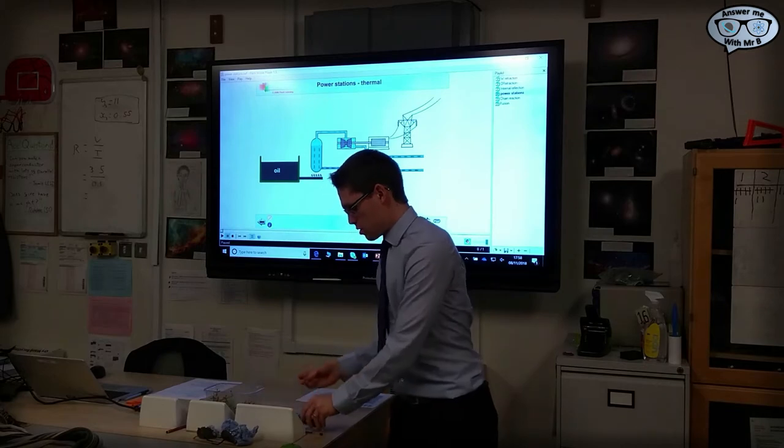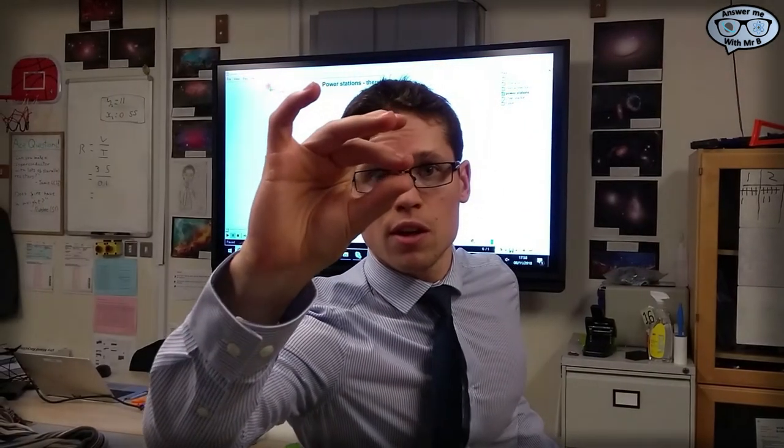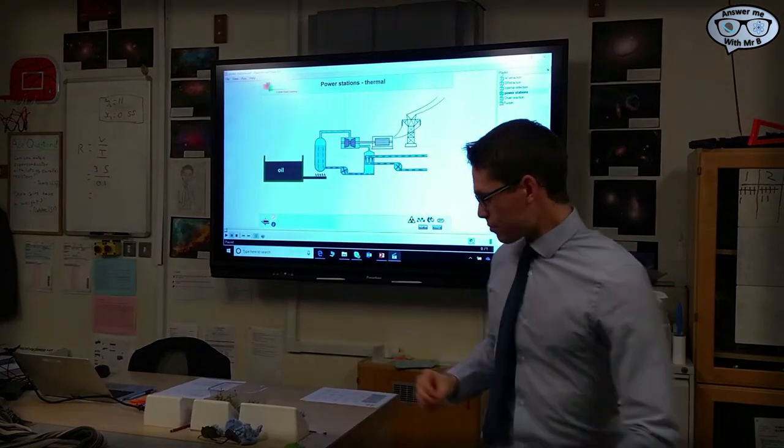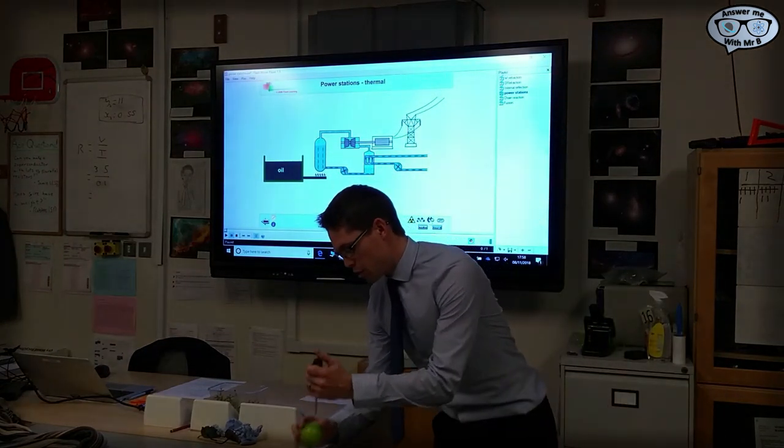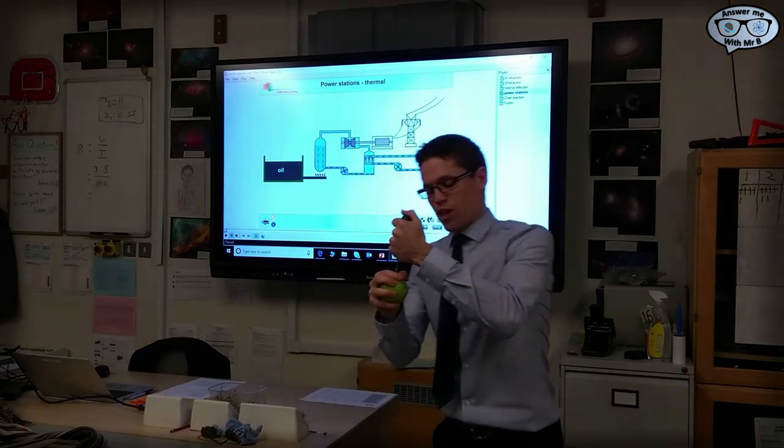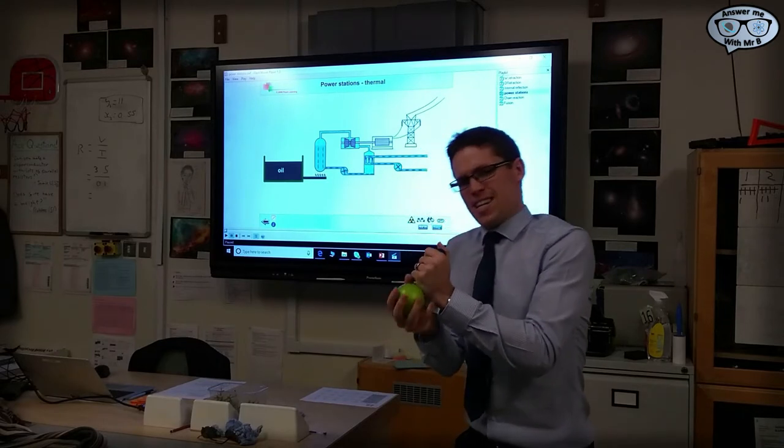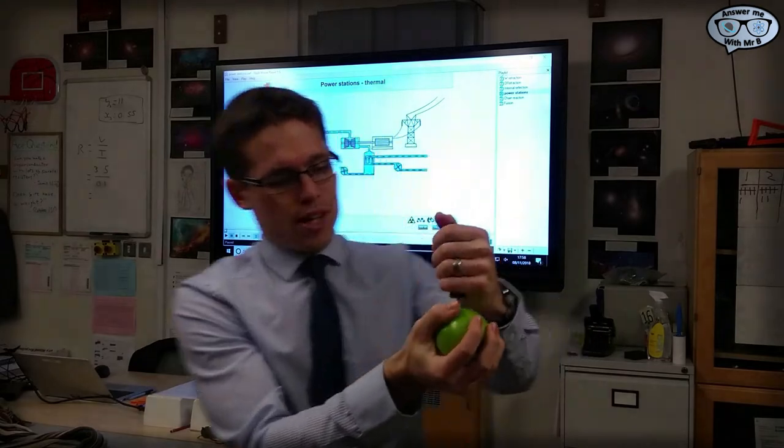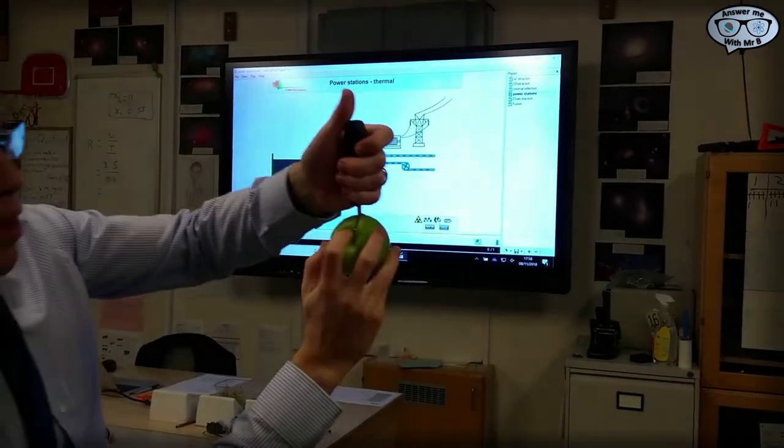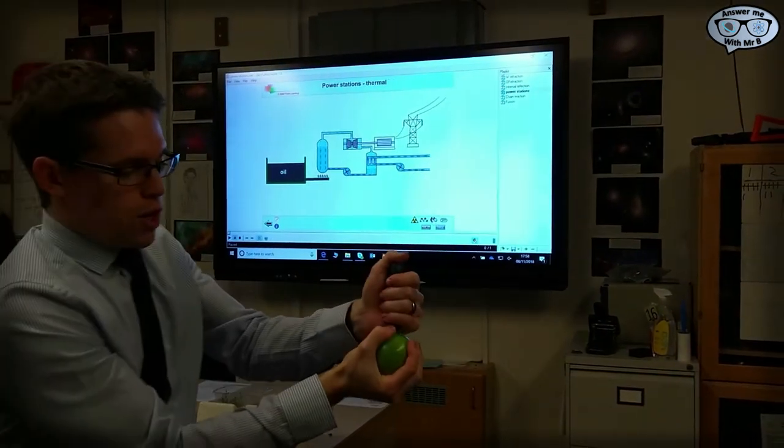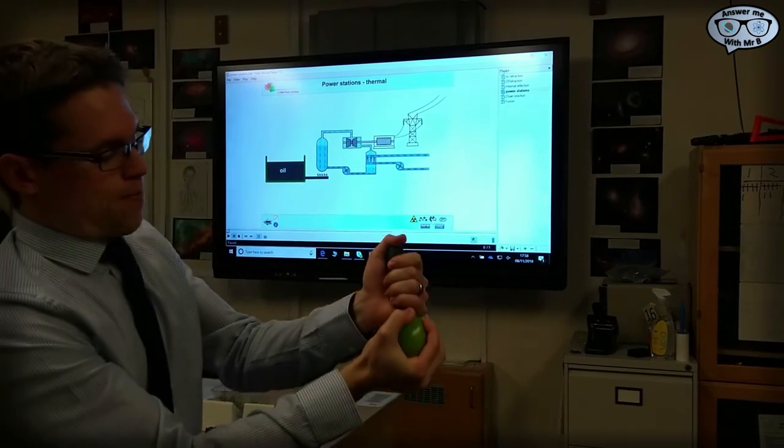And I do that by forcing it to absorb one of these. This is a neutron. Now you have to put that neutron in with quite a lot of energy, but eventually you should find that when the neutron gets absorbed, there it is, the nucleus will become unstable.